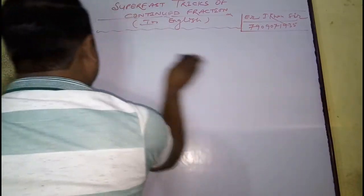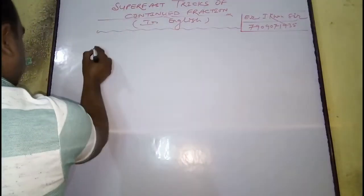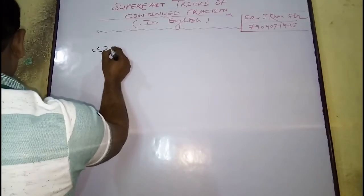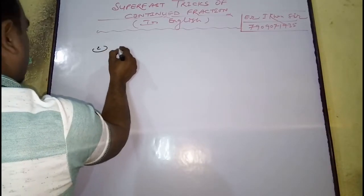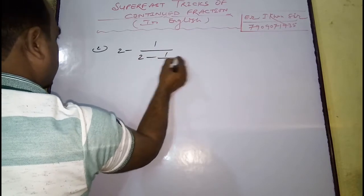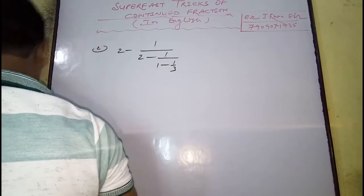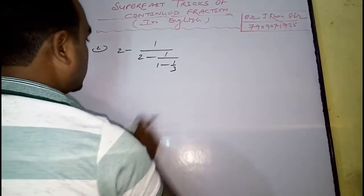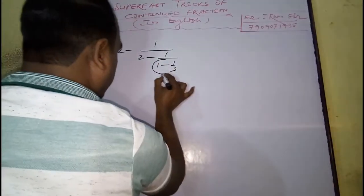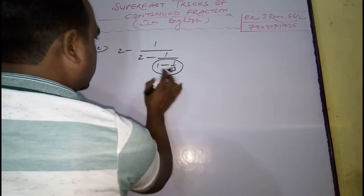This type of question may be in addition, subtraction, or division. The second example is: you have to solve 2 minus 1 by 2 minus 1 by 1 minus 1 by 3. First of all, you have to solve this bottom fraction, and you will get 2 by 3.